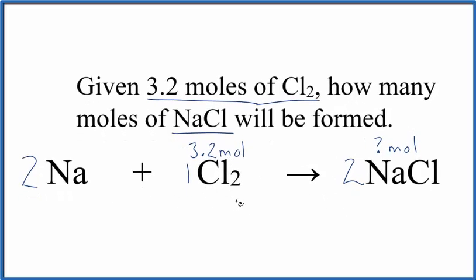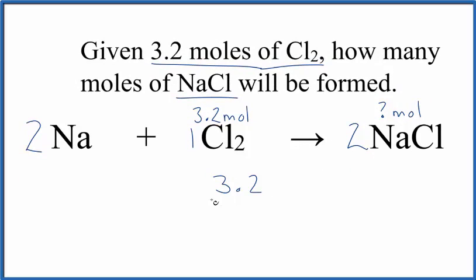And we could just set a ratio up. 3.2 to the 1 here equals x to the 2. When we solve for x here, we end up figuring out how many moles of NaCl we have. So that's the quick way to do it.